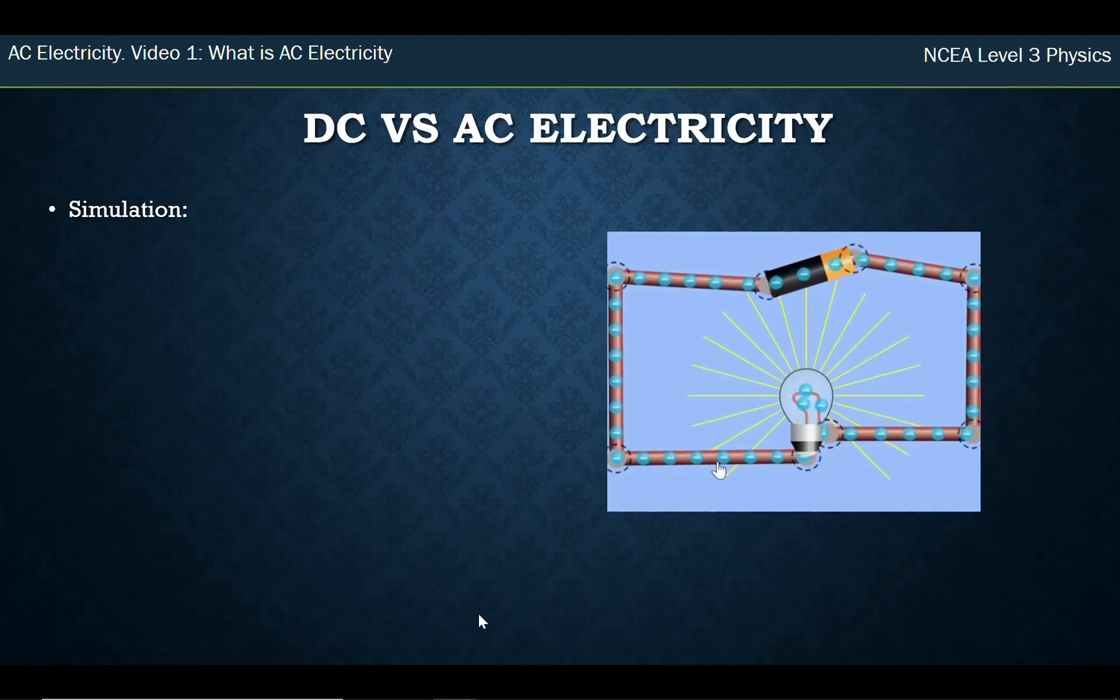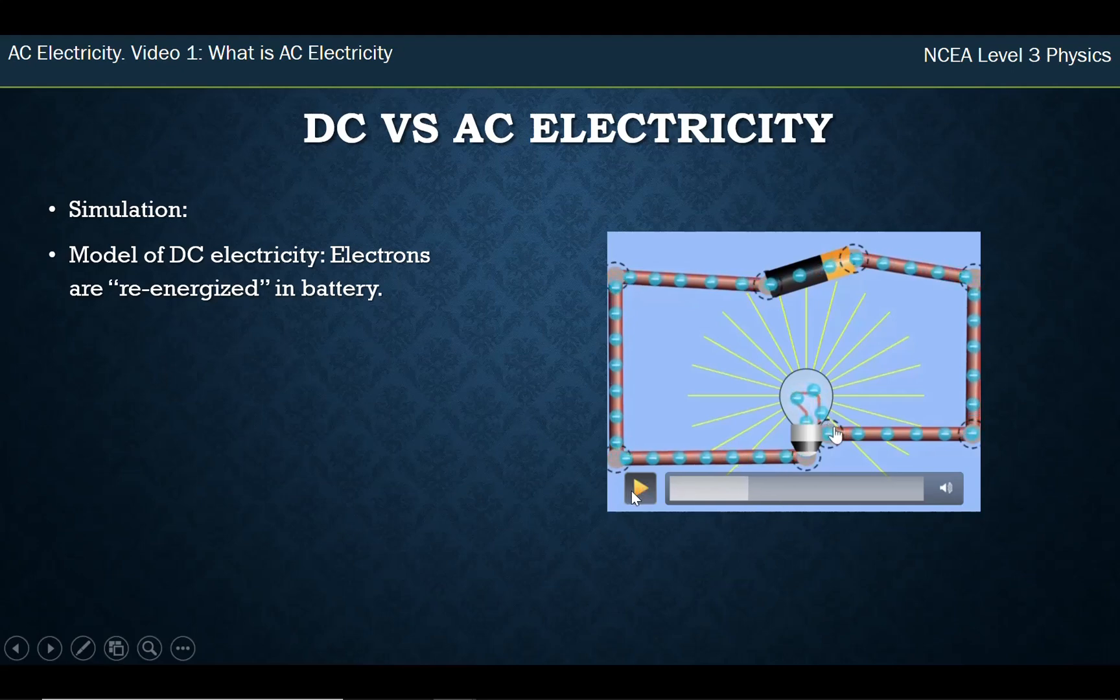Now the sort of model we use to describe this up until this point you might have heard that the electrons get all their energy in the battery, they go through the battery, they collect like buckets of energy, they carry them around the circuit until they get to the bulb, they drop it off and that's how the bulb goes bright.